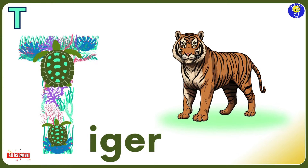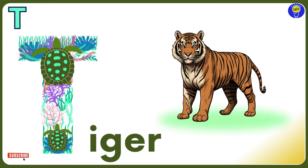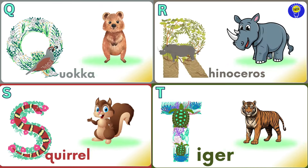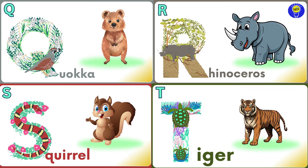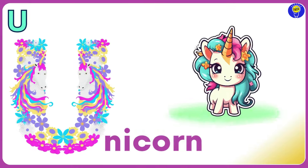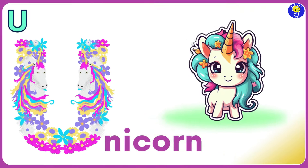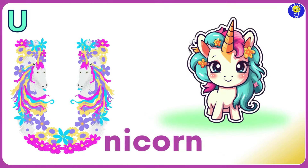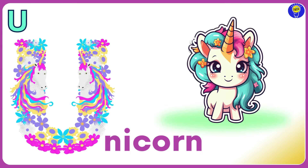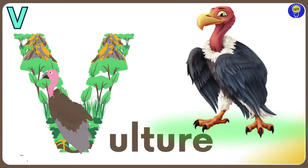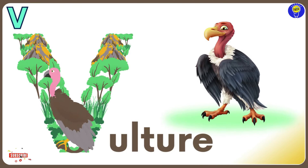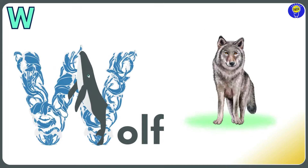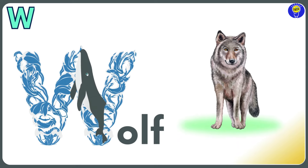T is for Tiger. T, T, Tiger. U is for Unicorn. U, U, Unicorn. V is for Vulture. V, V, Vulture.